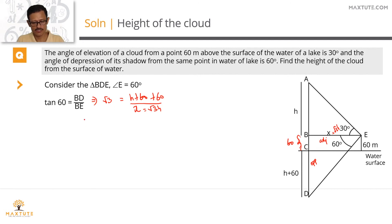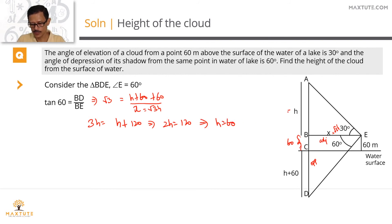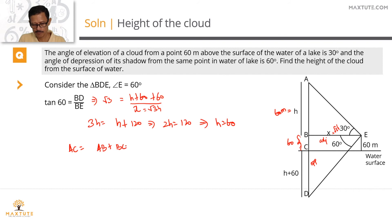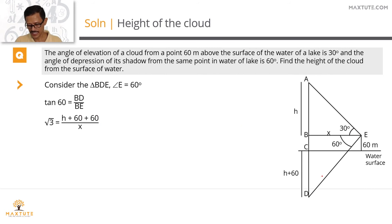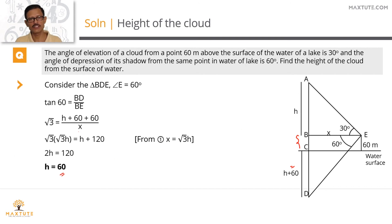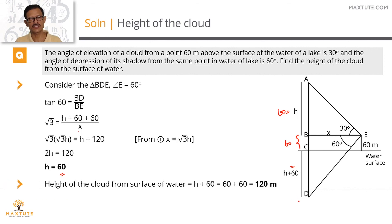Cross multiplying, root 3 times root 3H equals H plus 120, so 3H equals H plus 120. Taking H to the left: 2H equals 120, so H equals 60 meters. The height of the cloud from the surface of the water is AC, which equals AB plus BC — that's 60 plus 60 — equal to 120 meters.